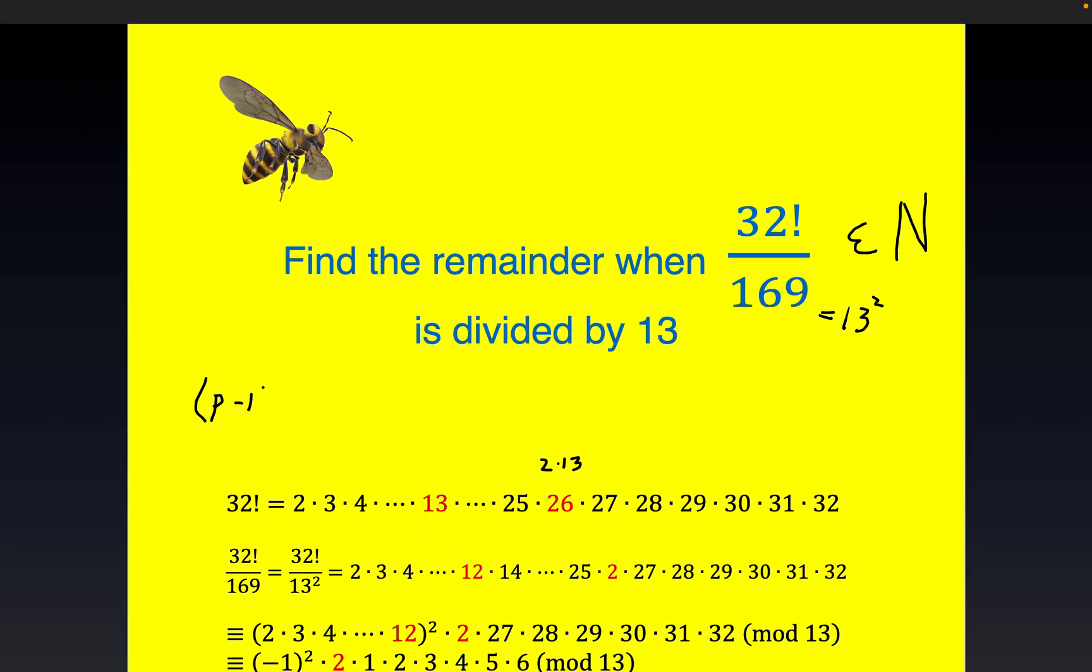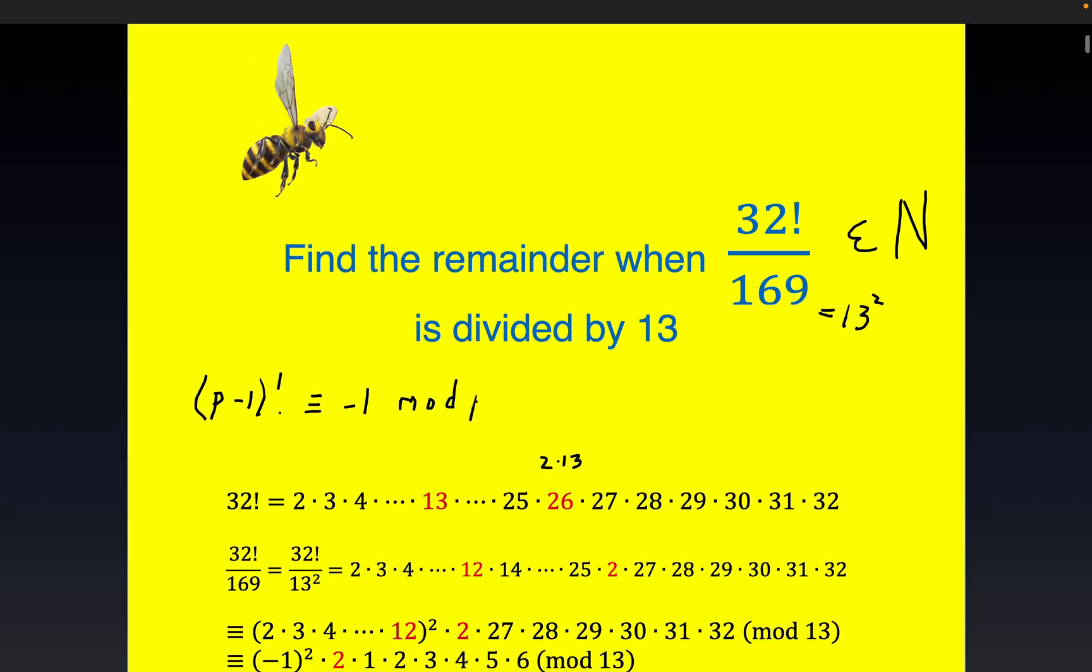It states that p minus 1 factorial is congruent to negative 1 mod p, modulo p where p is a prime. This holds for any prime. It actually gives necessary and sufficient conditions for a number to be prime, although the computations get super large.